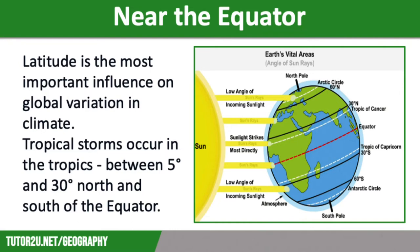This is because the equator receives much more solar radiation, also known as insolation, than the other latitudes, and this is because of the curvature of the Earth. The sun's rays hit the equator directly, so they are more concentrated, whereas towards the poles, the rays hit at an angle, so the radiation is spread out more.